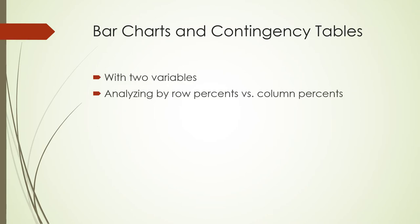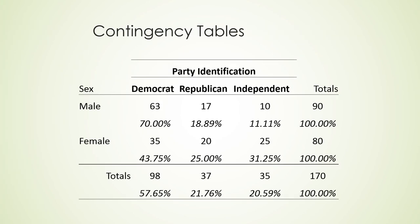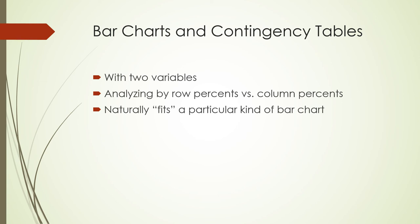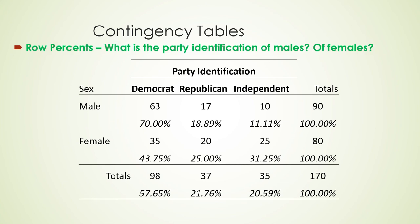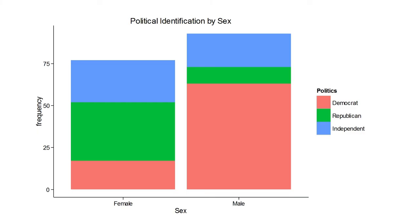Bar charts and contingency tables: when analyzing two variables, you can choose to analyze by row percents or column percents and that gives you different results, implying a different kind of bar chart. For instance, here's party identification by Democrat, Republican, Independent, etc. Row percents naturally answer the question: what is the distribution of party identification within males, and within females? So you'd want to see a male bar and a female bar — 100% stacked or not — and you can see the distribution of party identification within each sex group.